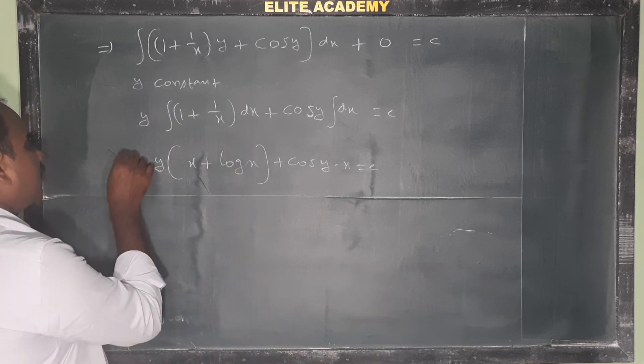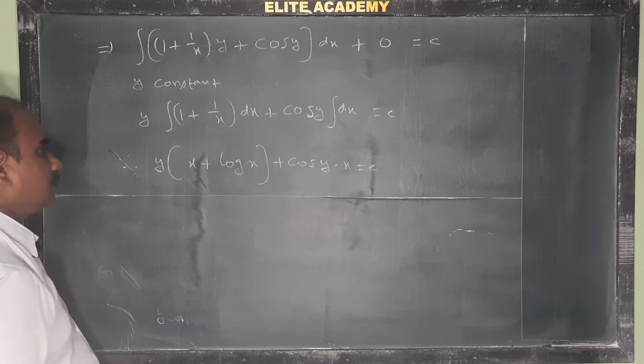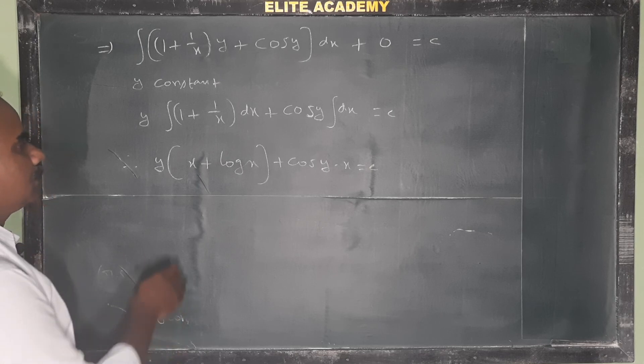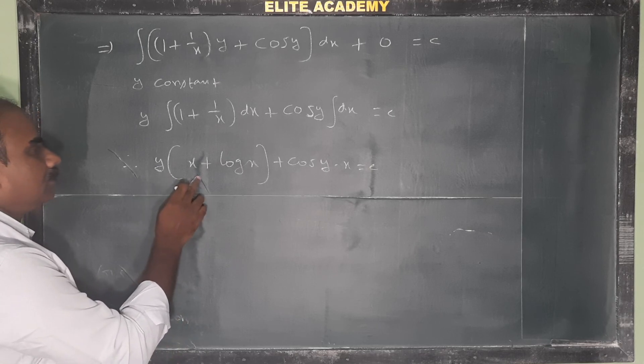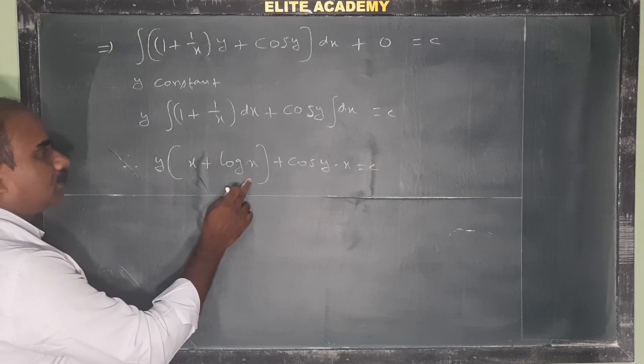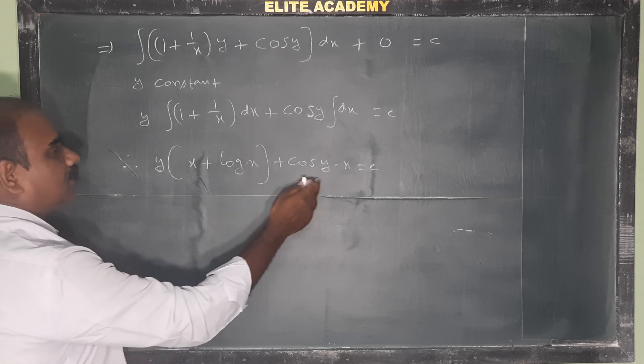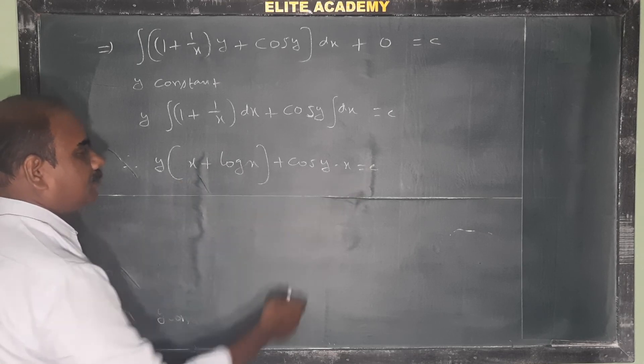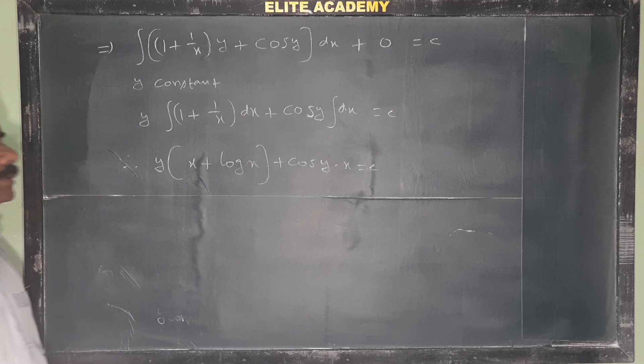Therefore, the general solution is: y(x + log x) + x·cos y = C.